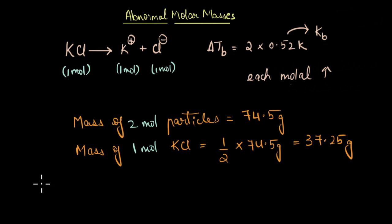From here we can see that whenever we have dissociation of solute particles, the experimentally obtained molar mass is always lower than the actual value of the molar mass. In this case, the experimentally obtained molar mass of KCl would be 37.25 grams, whereas the actual molar mass value is 74.5 grams.